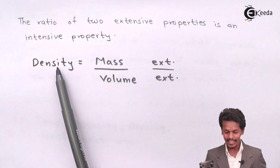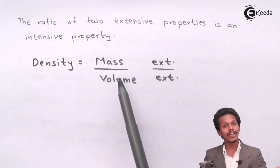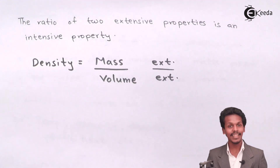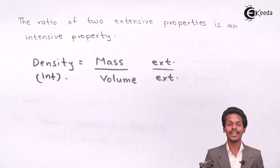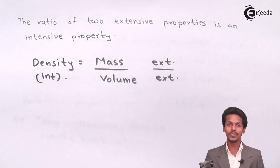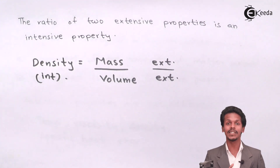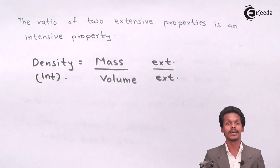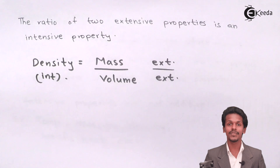In that case, density — which is the ratio of mass and volume — is actually an intensive property. These were the key details covered in this video: what is extensive property, what is intensive property, and the rule that the ratio of two extensive properties is an intensive property. Thank you friends for watching this video.